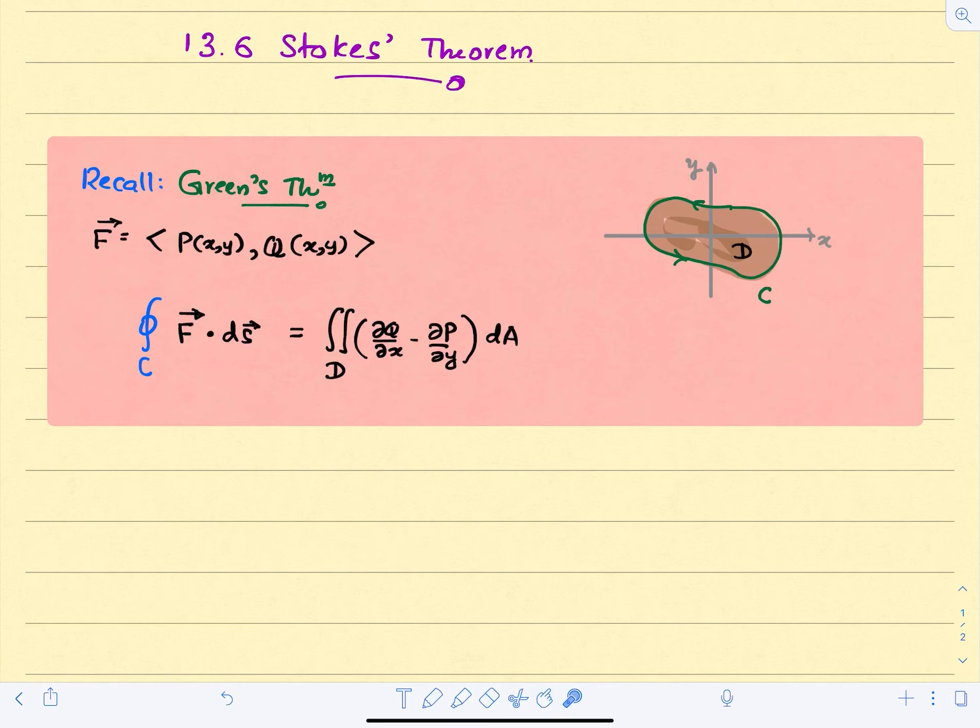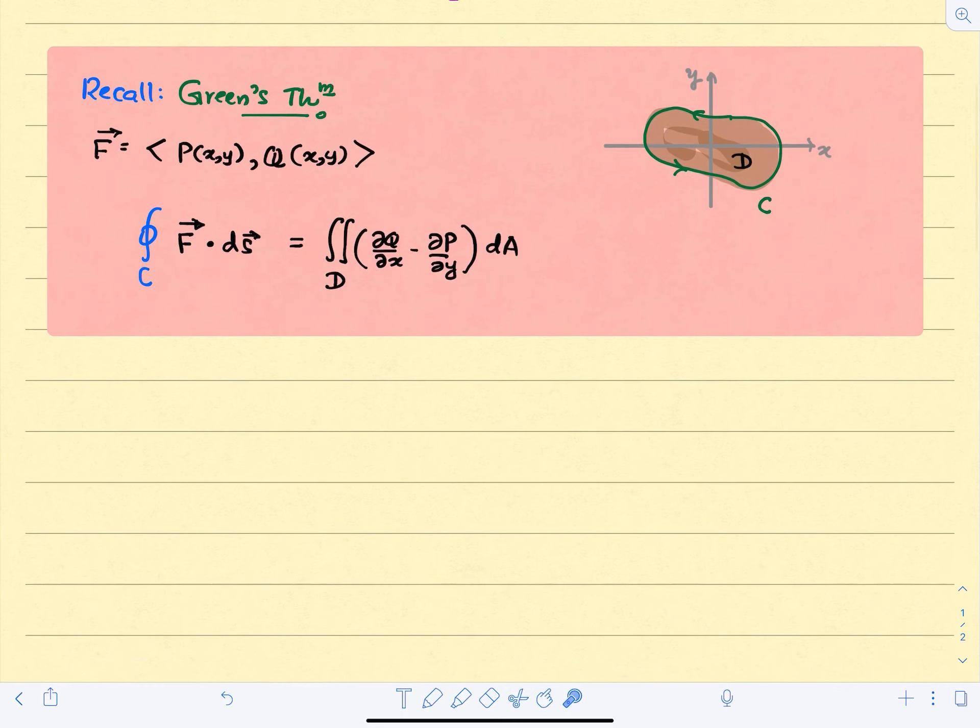then basically Green's theorem told us to evaluate this line integral using an area integral. So the line integral over the closed curve of F dot ds, this is an arc length element, equals to this area integral. Now it is not difficult to show that this quantity equals to curl of F dot k. So if you think about this vector field F equals to P, Q, 0, then you can calculate its curl of F, and if you take the dot product between this curl of F and the unit normal that points in the positive z direction, that's vector k, which is nothing but 0 comma 0 comma 1, then you will get the quantity inside this double integral.